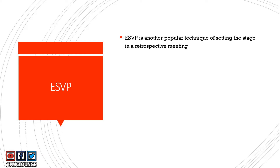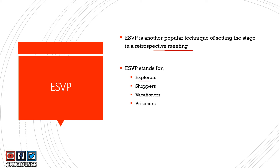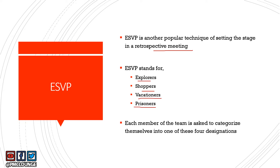The second technique is called ESVP — this is where you saw the four pictures in the beginning. ESVP is another popular technique for setting the stage in a retrospective meeting. ESVP stands for Explorers, Shoppers, Vacationers, and Prisoners. Each member of the team is asked to categorize themselves into one of these four designations, and we'll talk more about what each one means.